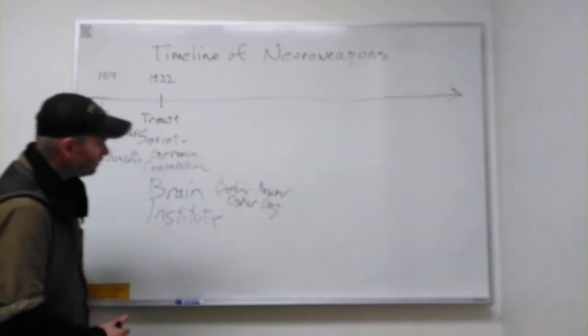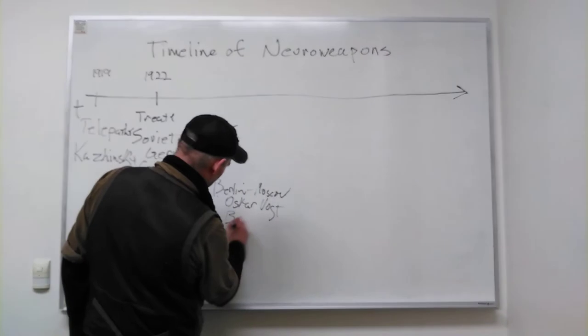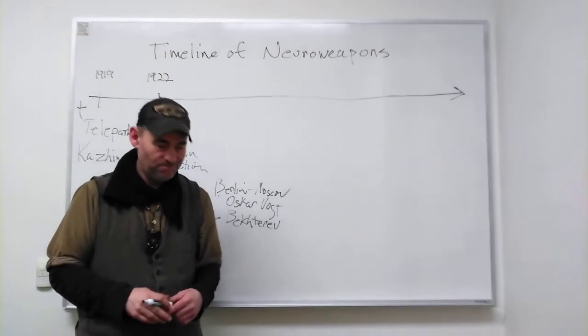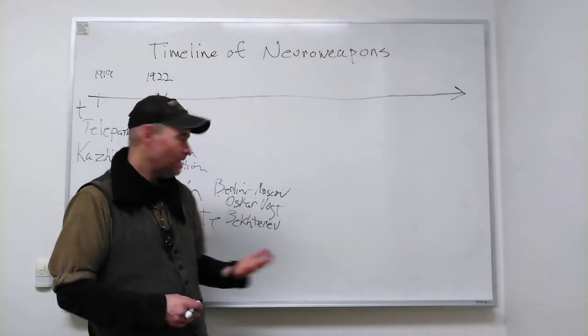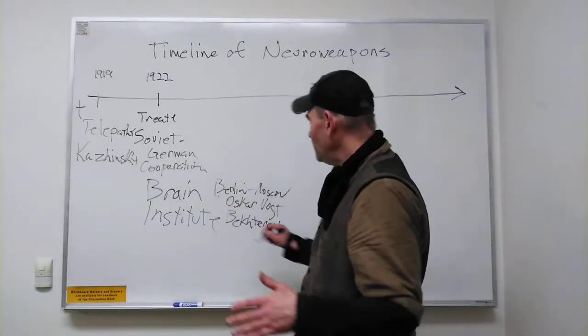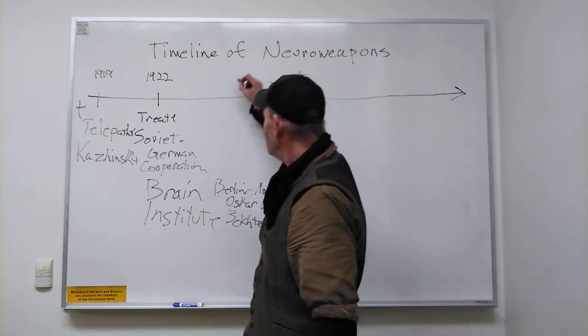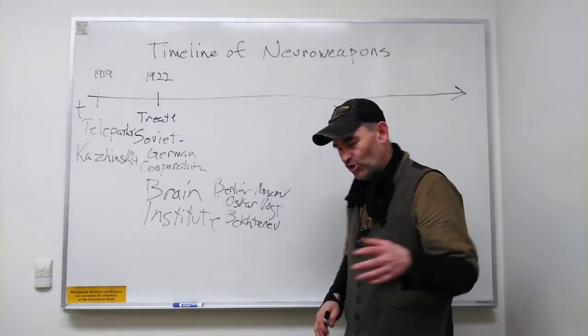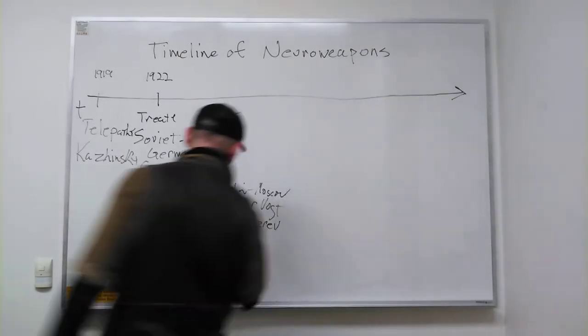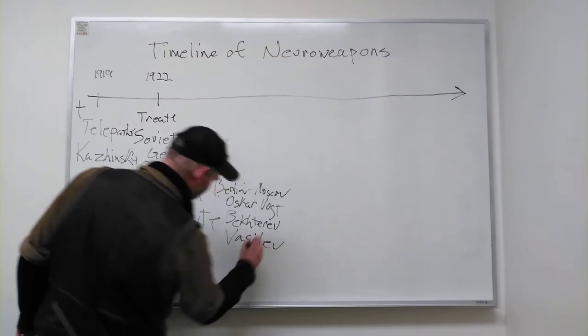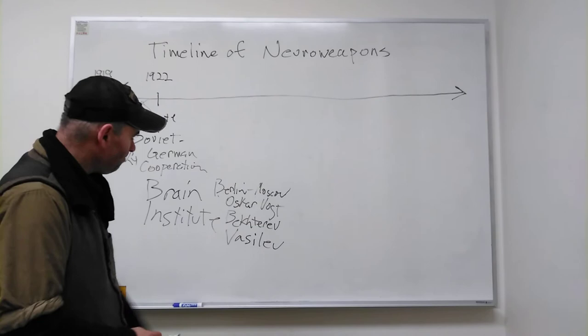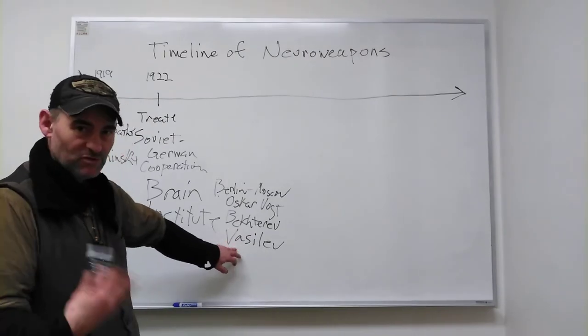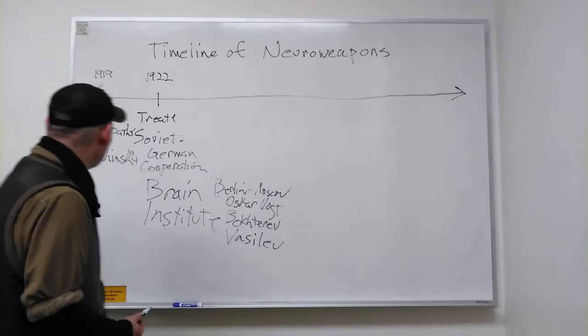After the Nazis come to power, the Berlin brain institute becomes nazified. The Moscow brain institute at this time is led by a person named Bekhterev. Bekhterev does some of the very early Soviet research in remote influencing telepathy. One of his students who joins the brain institute Moscow becomes a very important developer of this technology. His name is LL Vasiliev, and he becomes, after Bekhterev dies I think in 1927, one of the key researchers in this area in the Soviet Union.